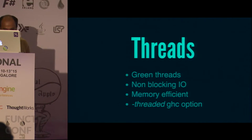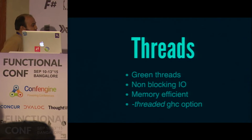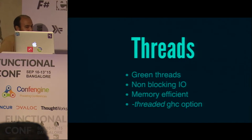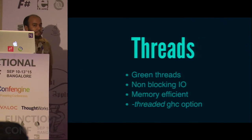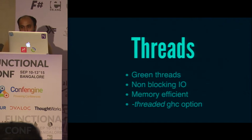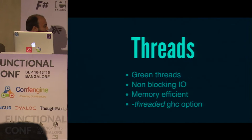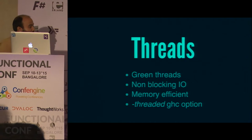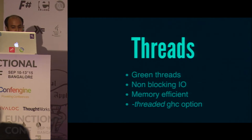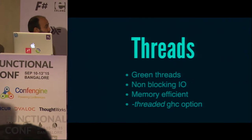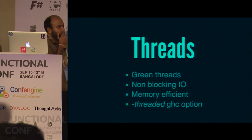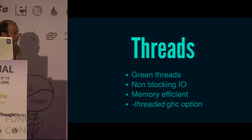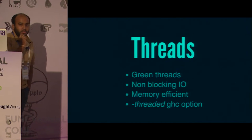So let's see what threads are in Haskell. Threads in Haskell are different from Java threads — they are green threads, meaning they are managed by the runtime, not by the OS. The runtime manages your green threads and maps them onto an OS thread pool, which are the actual OS threads.